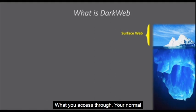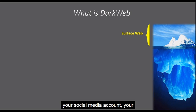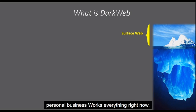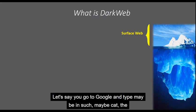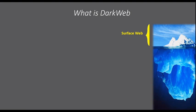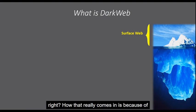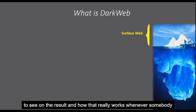The public web is what you access through your normal browser — maybe Facebook, Instagram, YouTube, net banking, social media accounts, personal and business work, everything. Now, when you go to Google and type something like 'cat,' the moment you type this you get thousands of results. That's because of indexing — Google indexes every website, every page of it.